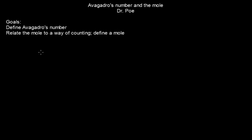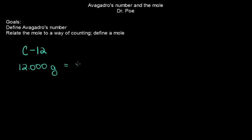Avogadro was a really wonderful person who came up with this number based on the isotope carbon-12. In studying carbon-12, we know that it weighs exactly 12.000000 grams. He took exactly 12 grams of carbon and used that to define exactly one mole. So instead of having a gold standard, chemistry actually has a carbon standard. One mole of carbon-12 weighs exactly 12 grams — that's defined as one mole.